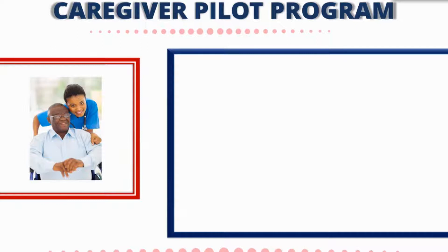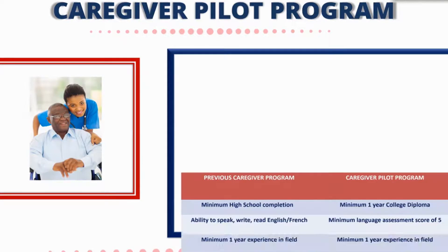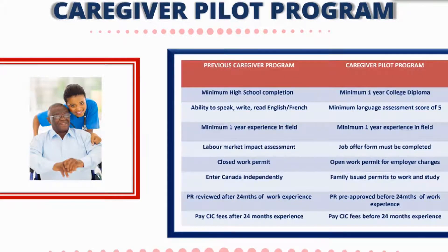Caregivers have been a consistent stream of migration into Canada for several decades. What's different about this program is the requirement for higher education and language capabilities compared to the previous program. There is now a minimum of one year college diploma — this is much higher than before. A language assessment is also now required, whereas before you only had to show proof of language ability in English, French, or both.